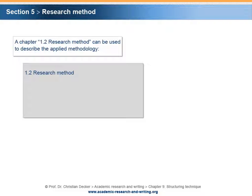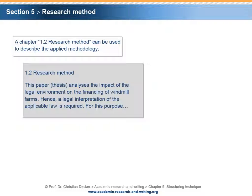For example, this paper analyzes the impact of the legal environment on the financing of windmill farms. Hence, a legal interpretation of the applicable law is required. For this purpose, and so on. Typically, one paragraph with four to five sentences is sufficient for defining the research method. However, in empirically focused research projects, more paragraphs with extended information on the applied methodology can be useful.